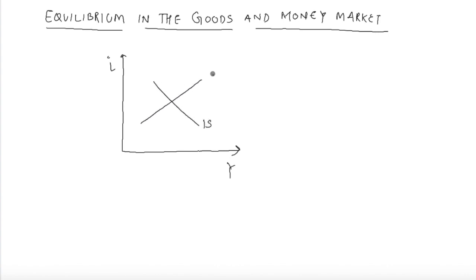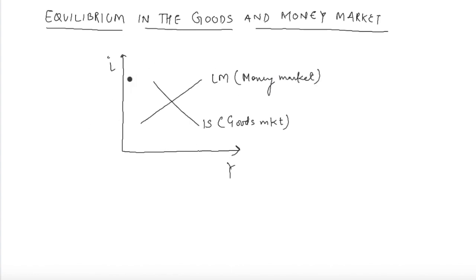This is the IS curve, this is the LM curve. We know that at all points on the IS curve, the goods market is in equilibrium, and at each point on the LM curve, the money market is in equilibrium. In this whole framework, we have one point where both the goods market and money market are simultaneously in equilibrium, and that is only the intersection point of the IS and the LM curve.